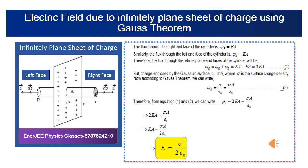While applying Gauss theorem, we should always take the area vector. We come across many situations where we need to know not only the magnitude of the surface area but also its direction. The direction of a planar area vector is specified by the normal to that plane. Whenever we consider the electric flux using Gauss theorem, we must consider the area vector, not just the scalar area.